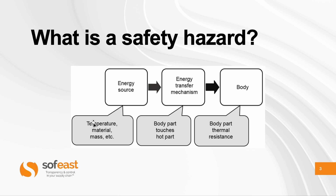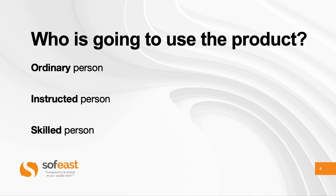There's an energy source — it could be a very hot product, a product that's moving, or something rotating. A body part touches, for example, a hot part. It's a mechanism of energy transfer onto the body. As the body touches the hot part, it might get burned — the skin might get burned, for example.